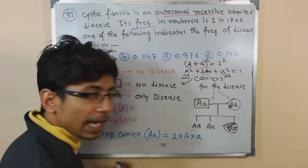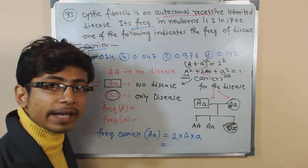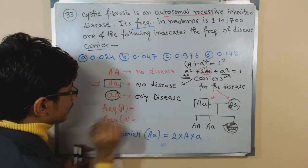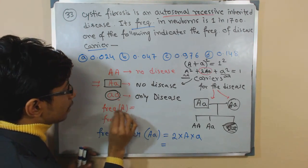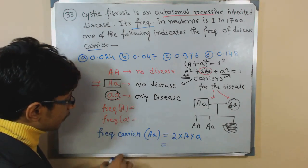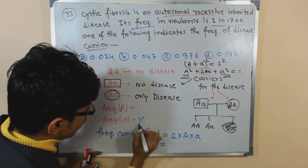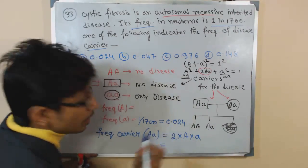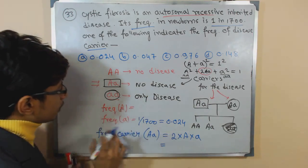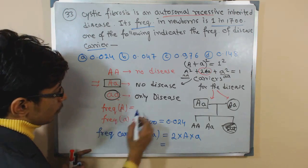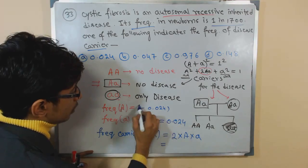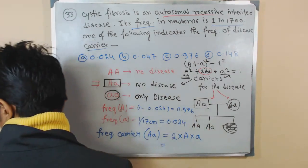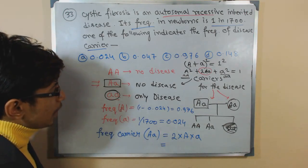The frequency of small a squared (having the disease) is 1/1700. So the frequency of small a equals the square root of 1/1700, which gives approximately 0.024. The frequency of capital A is then 1 minus 0.024, which equals 0.976.